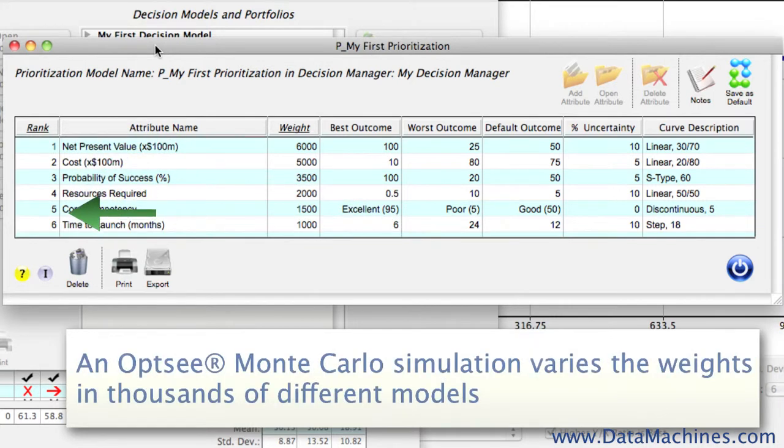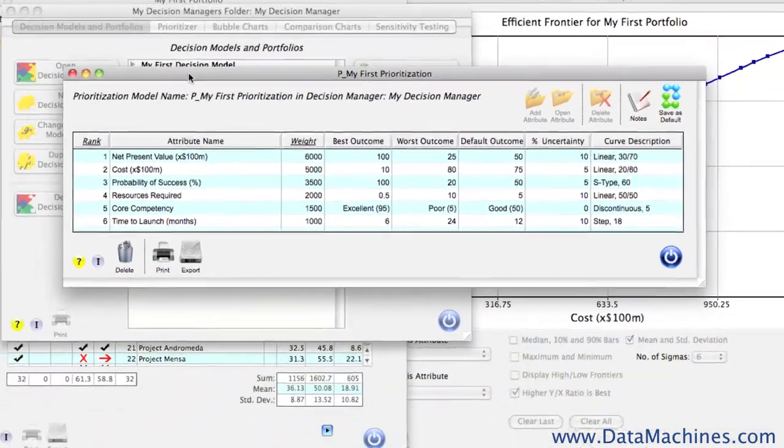What OPSEE does is take this discussion from specific weights to just ranking the attributes in order of importance, and then letting the Monte Carlo simulation vary the attribute weights in thousands of tests to give a distribution of value scores based on the outcomes of thousands of different models. It's kind of like doing a massive sensitivity test, but instead of just varying one attribute at a time, you're varying all of them at once.